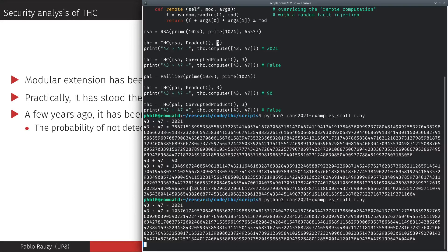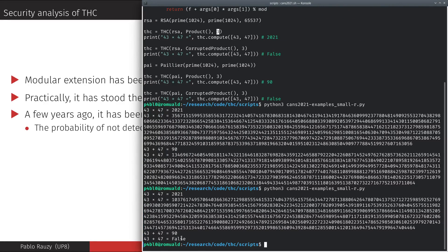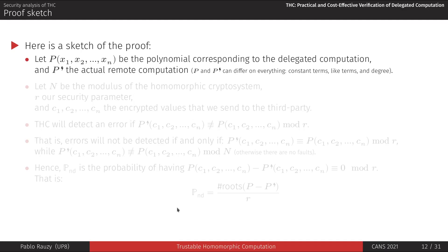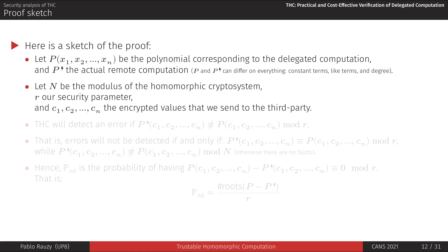We claim that the probability of not detecting a corruption is inversely proportional to R. Here is a sketch of the proof. We call P the delegated computation with XIs its homomorphically encrypted inputs, and P-prime the actual remote computation which might have been tampered with. Let N be the order of the modular structure, R our security parameter, and CIs our encrypted values as inputs. THC will detect an error if the results of P and P-prime on these encrypted values are not equal modulo R. Error will not be detected only if the delegated and remote computations are equal modulo R — and of course if there is an error.